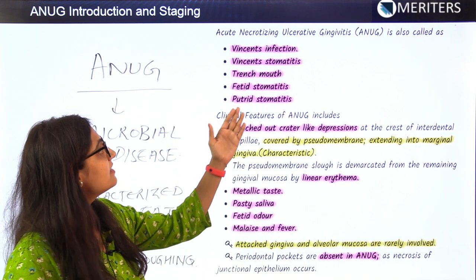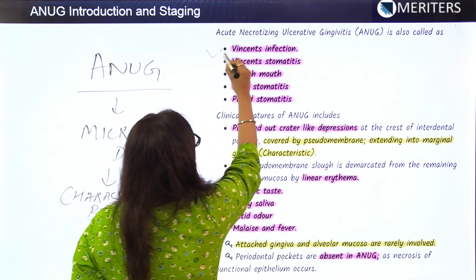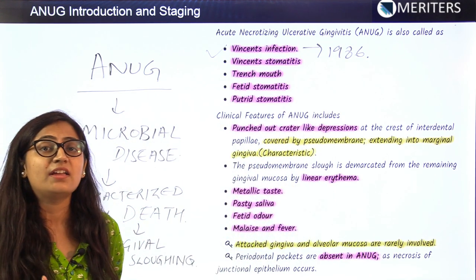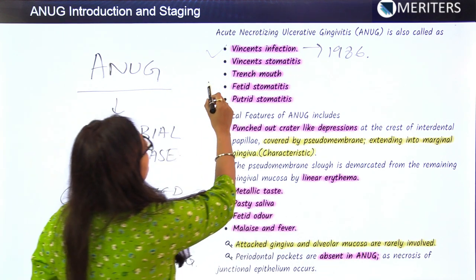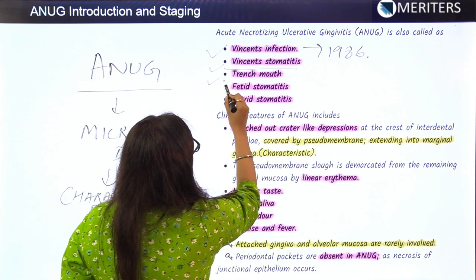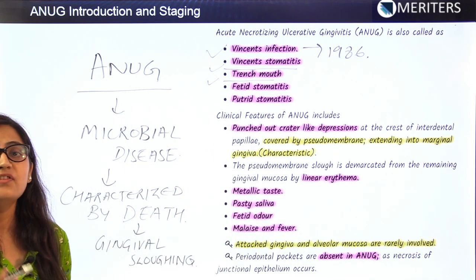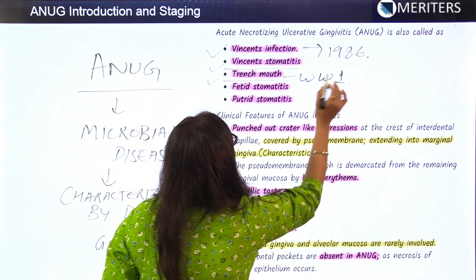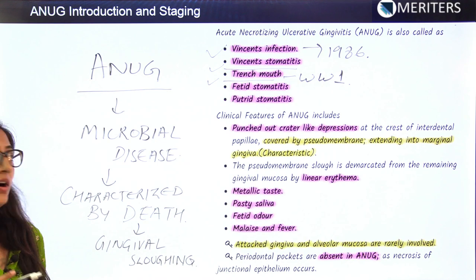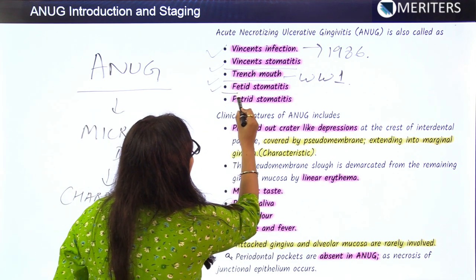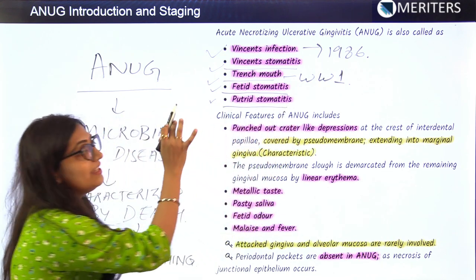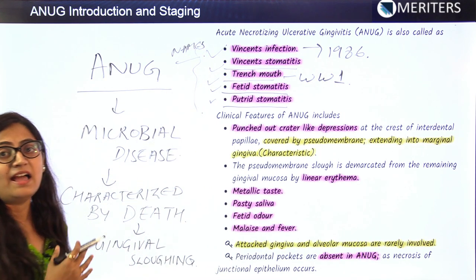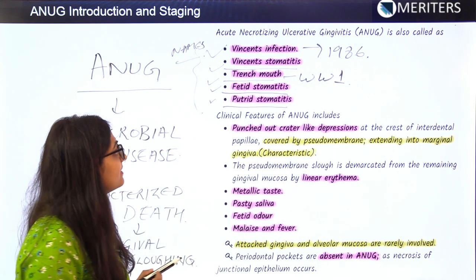Acute necrotizing ulcerative gingivitis is also called Vincent's infection, because Vincent described it as a disease due to spirochetal microbial infection. It is also known as Vincent's stomatitis, trench mouth — from its prevalence among soldiers in World War One trenches — fetid stomatitis, and putrid stomatitis. These are the different names to remember for ANAG.